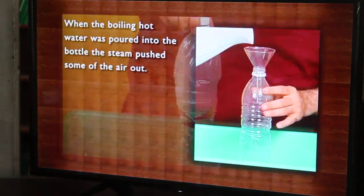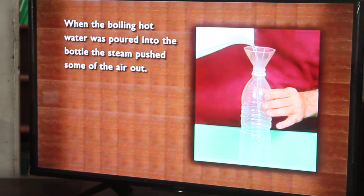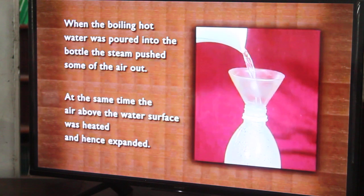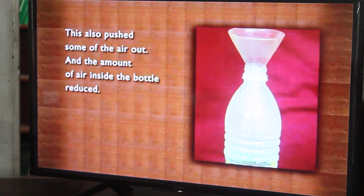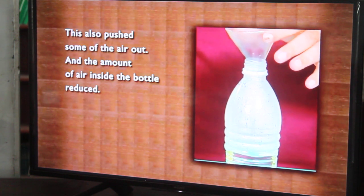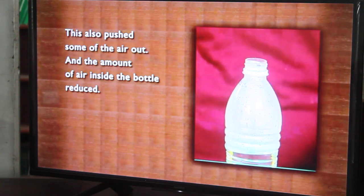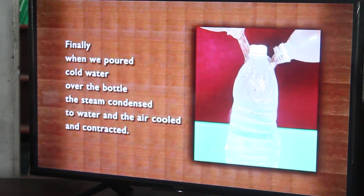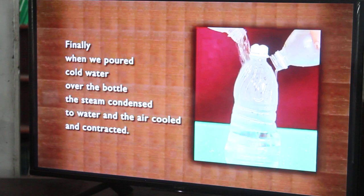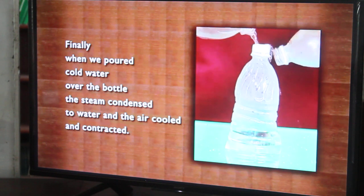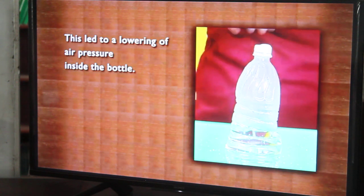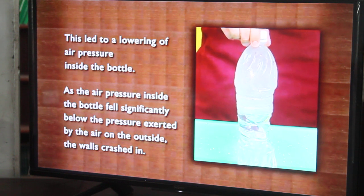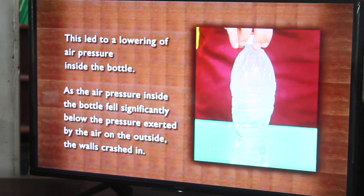What happened here? When the boiling hot water was poured into the bottle, the steam pushed some of the air out. The air above the water surface was also heated and expanded, pushing more air out, so the amount of air inside the bottle reduced. When we capped the bottle, the air could not enter back in. When we poured cold water over the bottle, the steam condensed to water and the air cooled and contracted. This led to lowering of air pressure inside the bottle. As the air pressure inside fell significantly below the pressure exerted by the air on the outside, the walls crashed in.